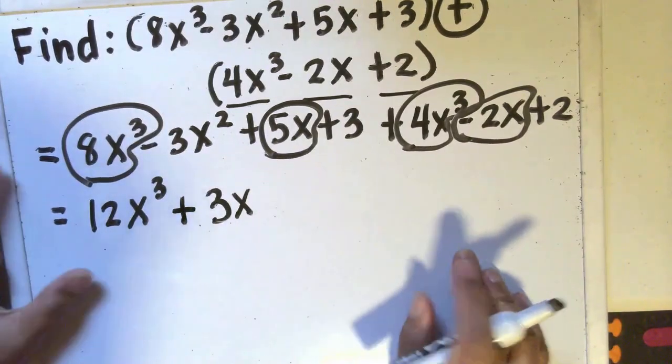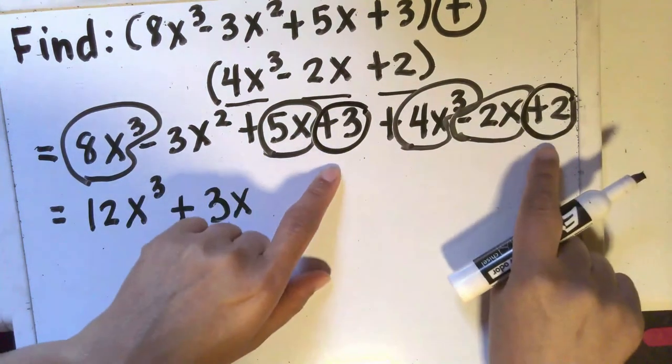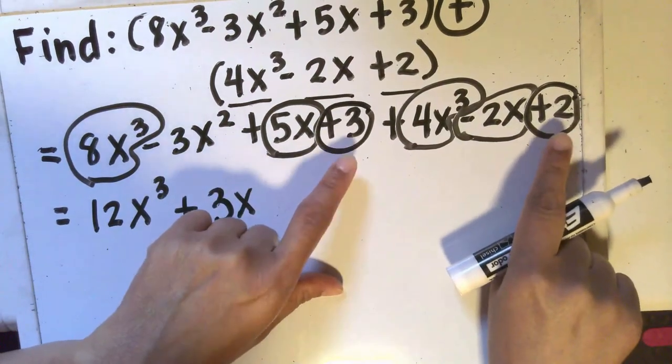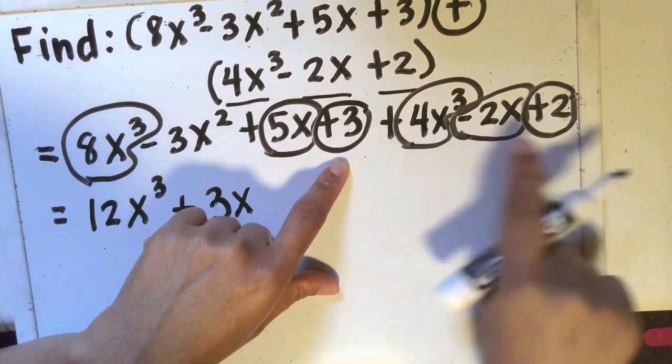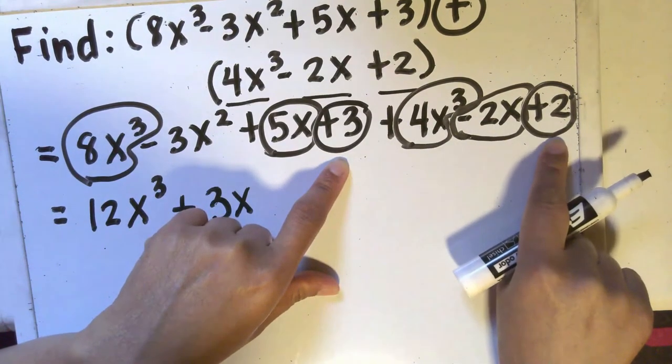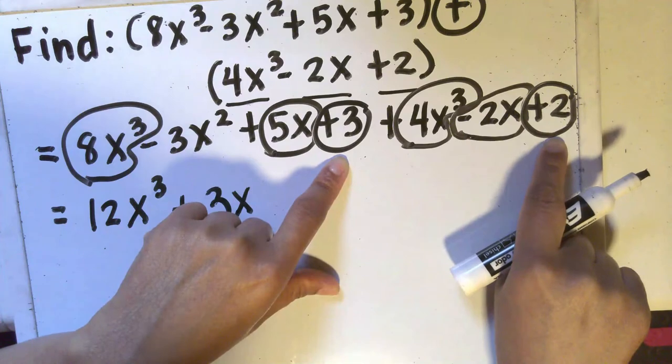I can also combine positive 3 and positive 2 because although they don't have variables written right next to them they're both constant terms and I can combine constant terms. So 3 plus 2, again it's just like combining integers with the same sign, so we'll simply add them since the signs are the same. 3 plus 2 is 5 so I'll have plus 5.